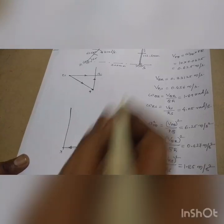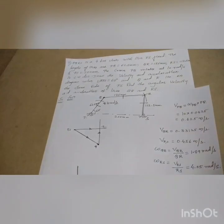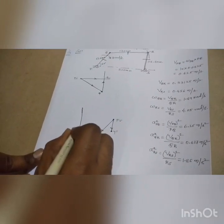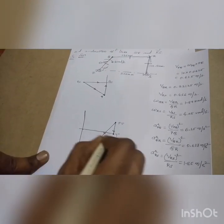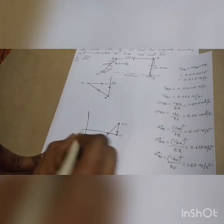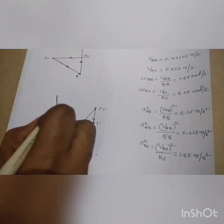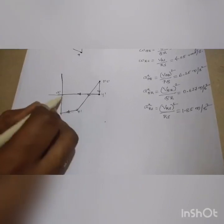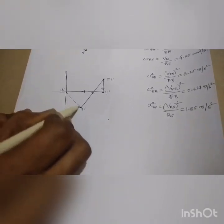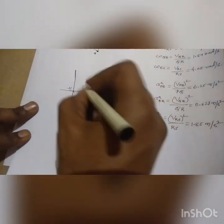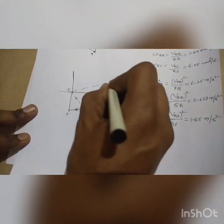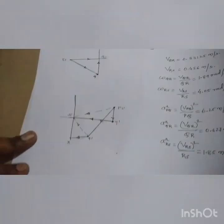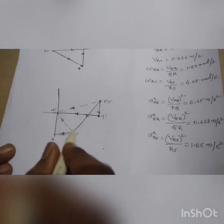The tangential component of RS is perpendicular to RS, so from Y' I draw a perpendicular line. This perpendicular line intersects the perpendicular line drawn from X, and their intersection gives the point R'. I represent the direction of the vectors and this completes the acceleration diagram, with resultant vectors q'-R' and S'-R' identified.